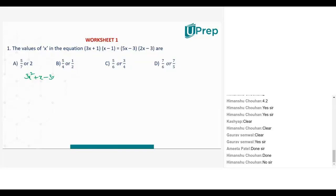3x into x, that is 3x square, plus 1 into x, x, minus 1 into 3x, minus 3x, plus 1 into minus 1, minus 1.